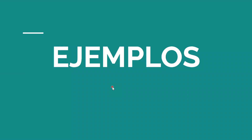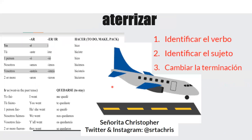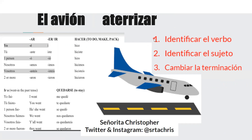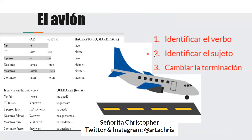Vamos a hacer algunos ejemplos — let's do some examples. Aterrizar means to land. Let's make this into a sentence: the plane landed — el avión aterrizar. Going through our steps, first we have to identificar el verbo — aterrizar. Then paso dos, identificar el sujeto — el avión.